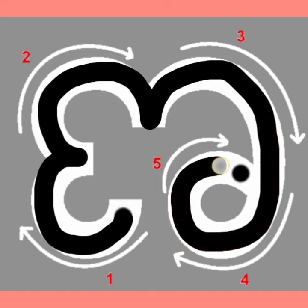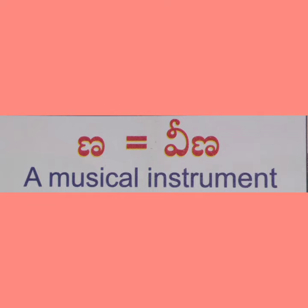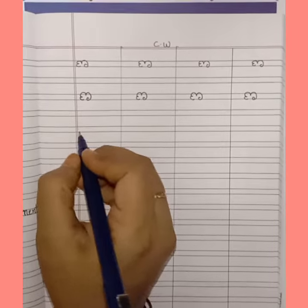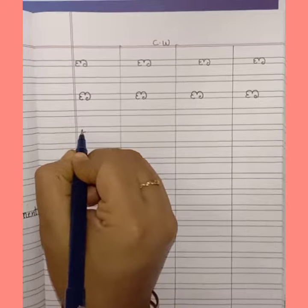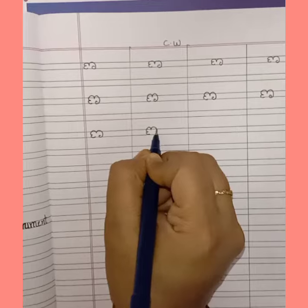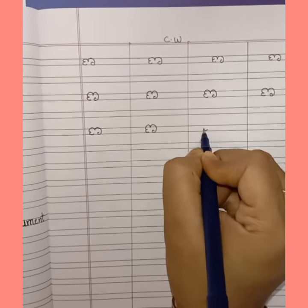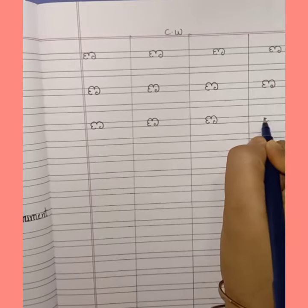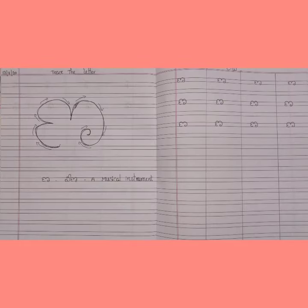Ana veena — a musical instrument. Now see carefully on the screen how to write the letter Ana with the help of arrow marks. See, children, how I am writing the letter Ana. Ana veena, a musical instrument.